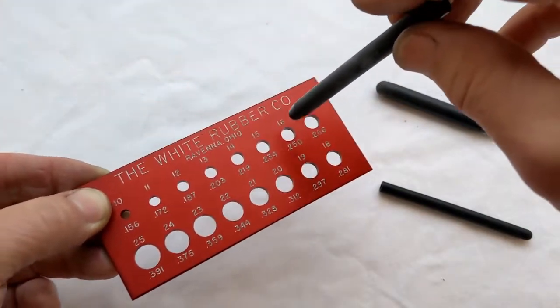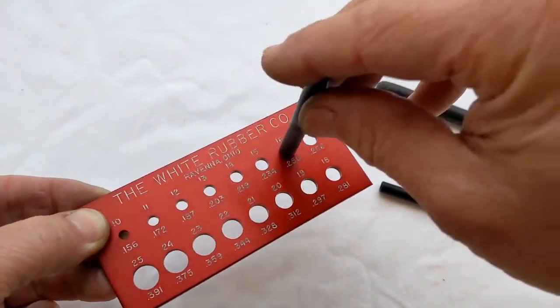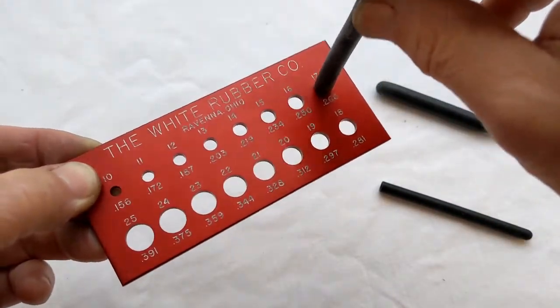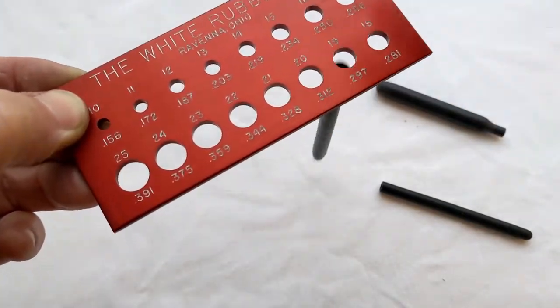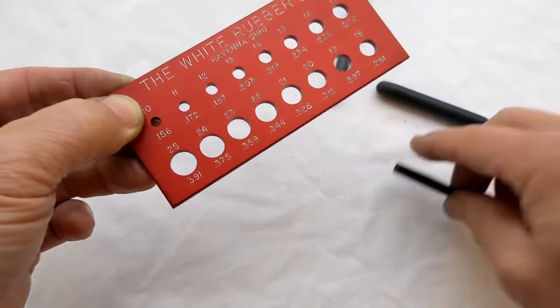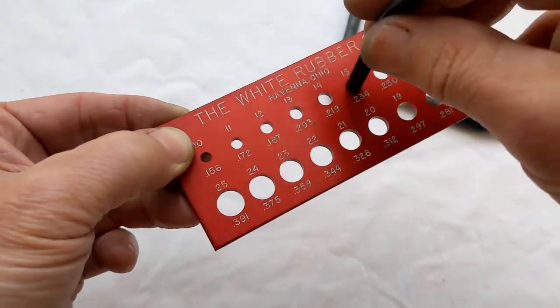This sac, let's try it here. 16 doesn't fit, 17 doesn't fit, 18, 19, ah, there we go. So it's a 19 sac and you get the same idea.